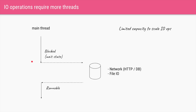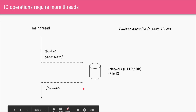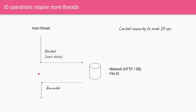Once the network or file IO is completed, your thread goes back into a runnable state and it can process the data returned by the IO operation. This problem of having a blocking thread that does nothing while the operation is being performed limits your capacity to scale IO in your apps. You cannot have thousands of operations doing IO because every one of them will block and your CPU is not being used efficiently.